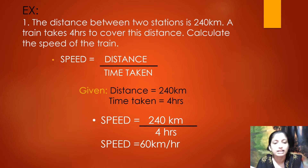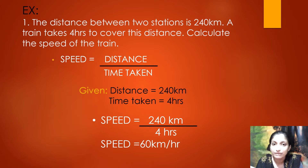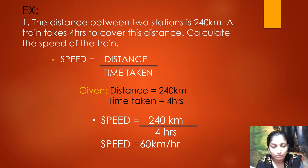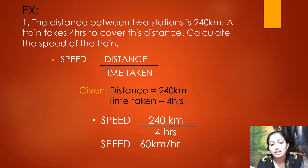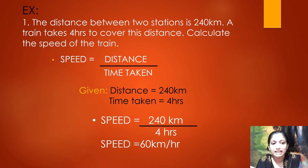Using this formula you can calculate speed if distance and time are given. If speed and time taken are given and you need to find distance, the formula becomes: distance equals speed multiplied by time taken. You can rearrange this formula to find any one of the three quantities — speed, distance, or time.